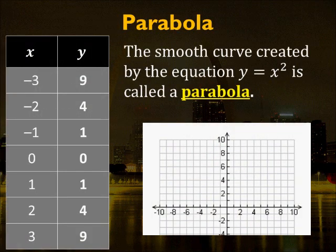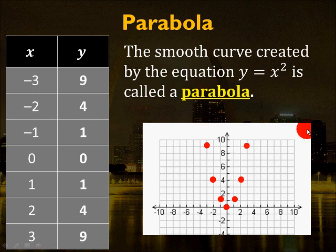First, we have to define a parabola. A parabola is the smooth curve created by the equation y equals x squared. On the table, I have a set of values for x and a set of values for y, plugging x into the equation for the parabola. All you have to do is plot the points. So we have: negative 3, 9; negative 2, 4; negative 1, 1; 0, 0; 1, 1; 2, 4; and 3, 9. All the y's represent the square of the x's, and you connect the dots in a nice smooth way.